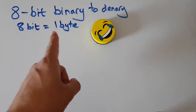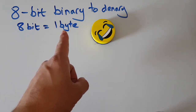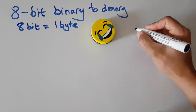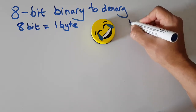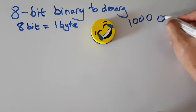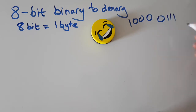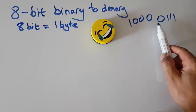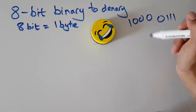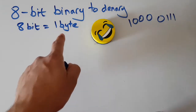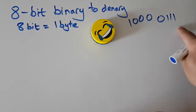8 bits also has another name: a byte. So 8 bits is also known as a byte. Here's a random byte: 1-0-0-0-0-1-1-1. Have I got 8 bits there? 1-2-3-4-5-6-7-8. Yes, I do. So I have 8 bits, or a byte — a byte of information.